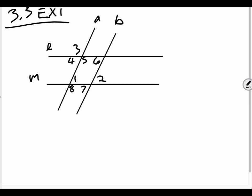And basically it says, which lines are parallel if angle 1 is congruent to angle 2? So I have a bunch of lines here. Notice that Mr. Adams didn't draw the double arrows yet because they may or may not be parallel. We don't know.